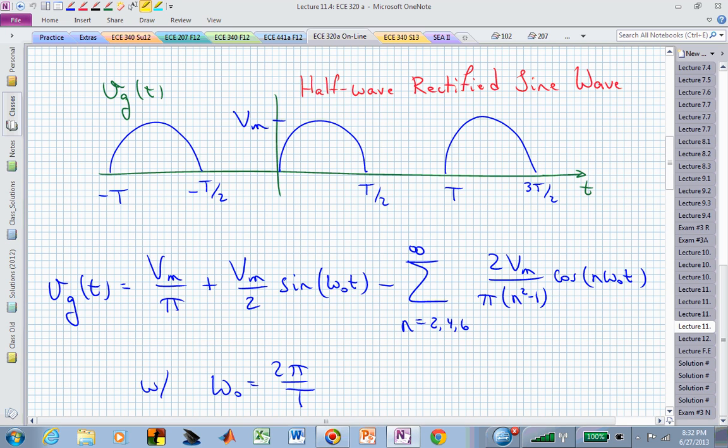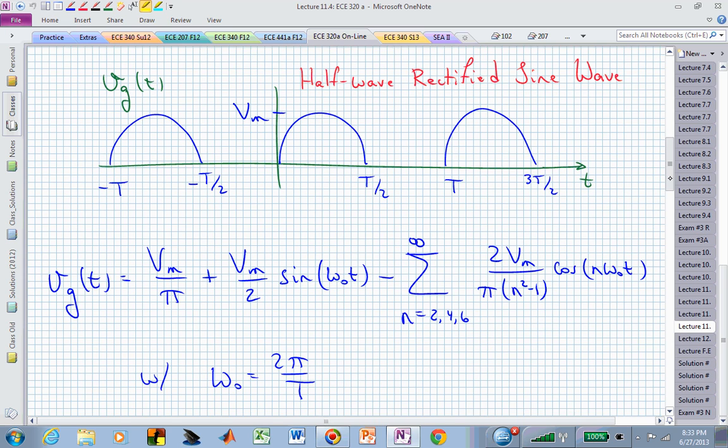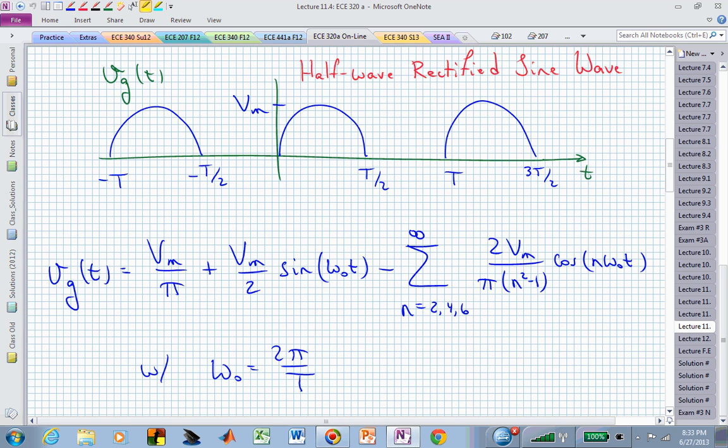We do have a DC offset, which is the maximum amplitude of that half-wave rectified sine wave divided by pi. And again, wherever you see this omega-naught, that's 2pi over the fundamental period, capital T.